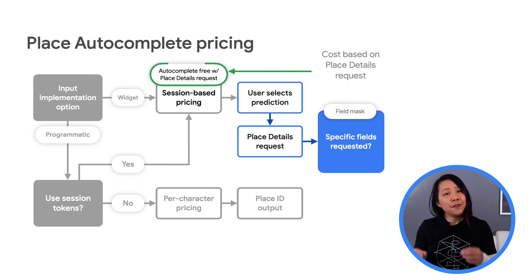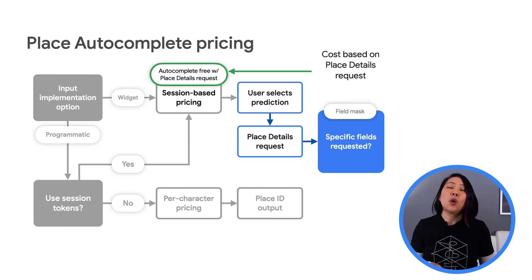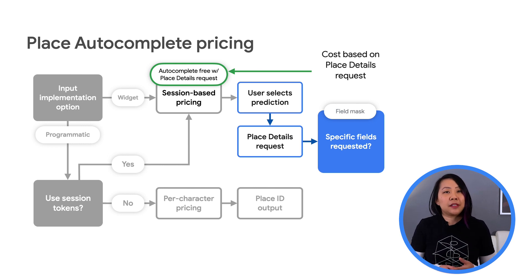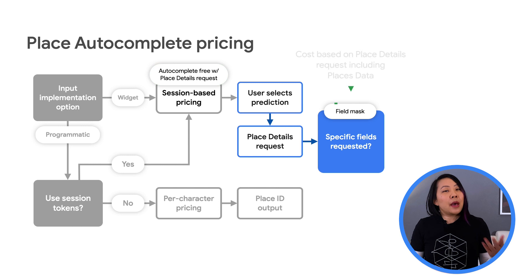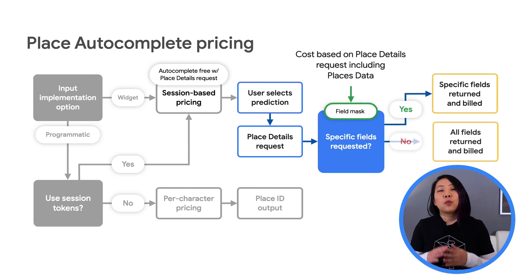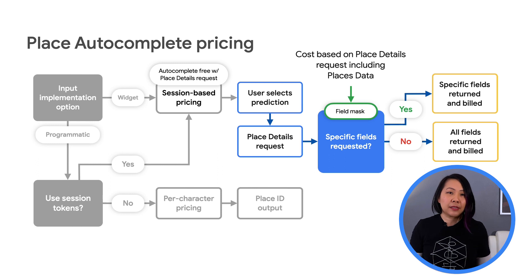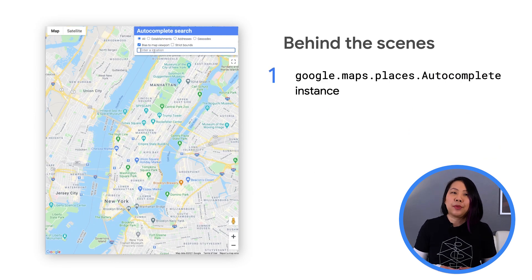If you request place details about the selected place within your autocomplete session, you get the autocomplete part for free and just pay for the place details. However, those place details have a range of cost depending on how much detail you get about the place. I'll show you an example.